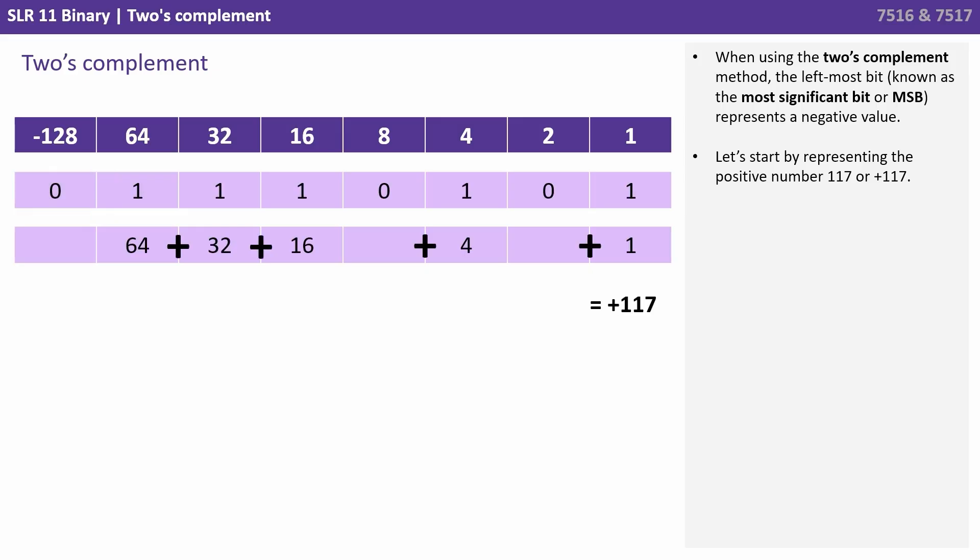We then place a one in each of the columns required to get to 117. So a 64 plus a 32 plus a 16 plus a 4 plus a 1. Positive 117.